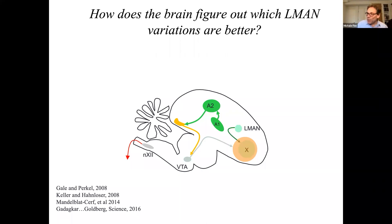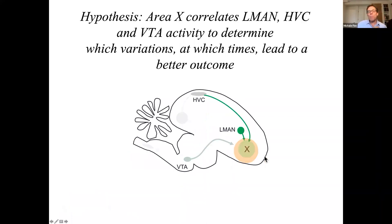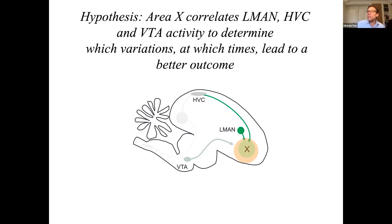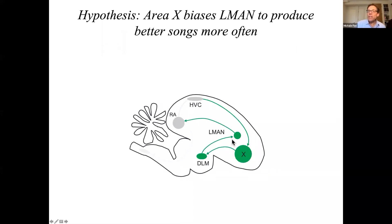But that's not enough. The same L-MAN fluctuation that makes a song better in one song syllable might make the song worse in a different song syllable. Because there's a projection to area X from HVC that's been shown to carry timing information, area X can do that correlation of L-MAN activity with song performance independently at every moment in the song. So area X can figure out which L-MAN fluctuations at each time in the song make the song better, and then use that information to bias L-MAN activity to produce good variations more often.